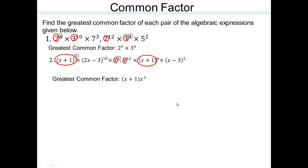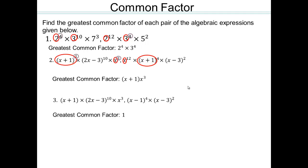Look at the difference between greatest common factor and least common multiple. Try this next one on your own. There is nothing common — no x plus 1, no 2x minus 3, no x to the 3rd. But even if there is nothing common, 1 is always a common factor across all quantities because 1 is the multiplicative identity. Don't forget that.